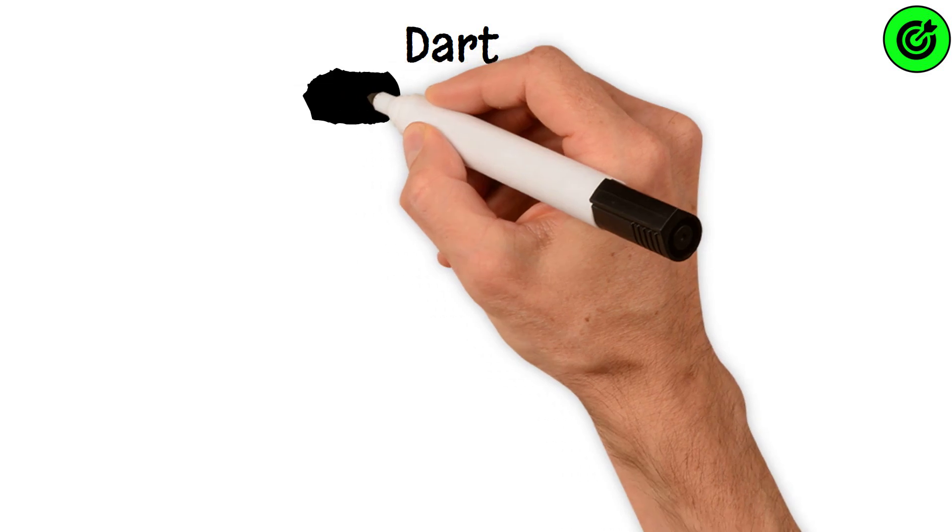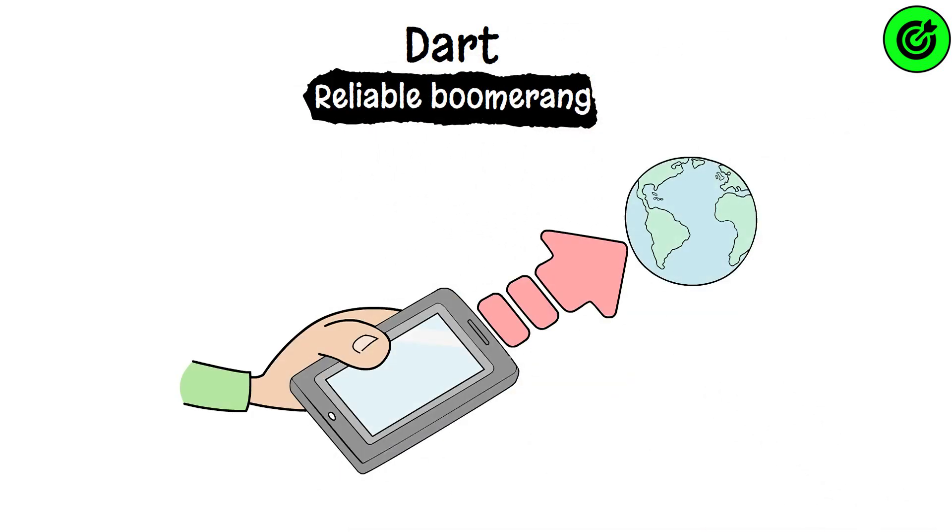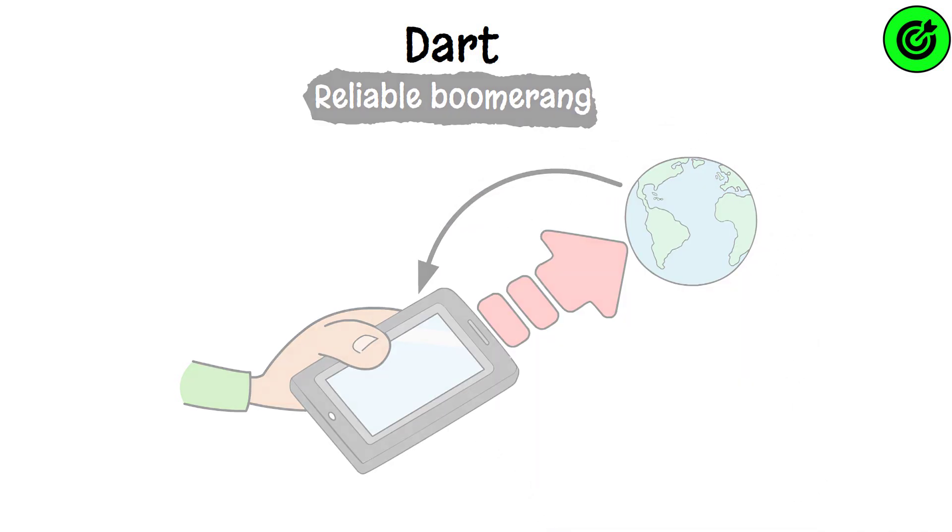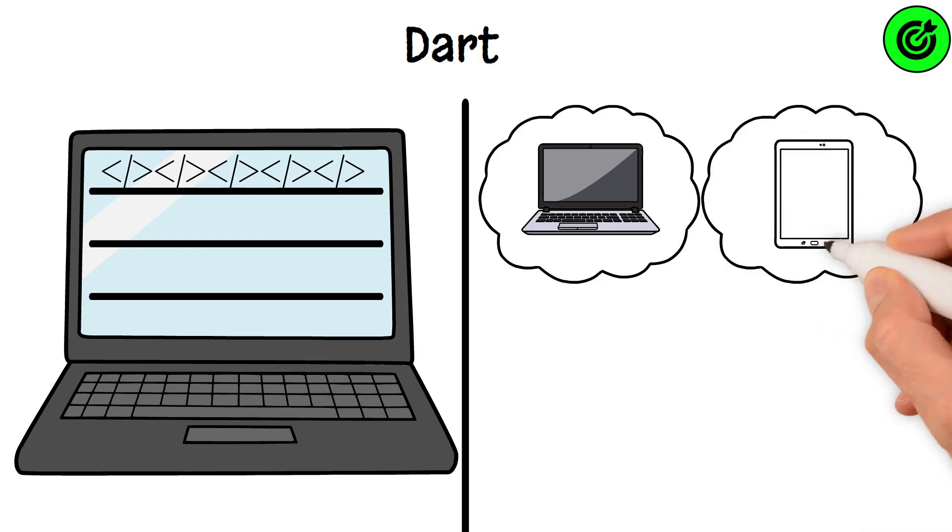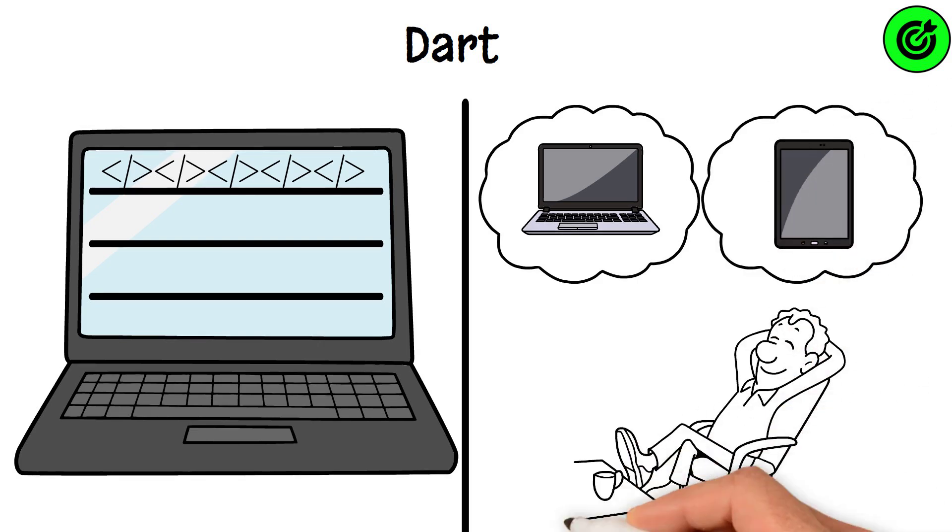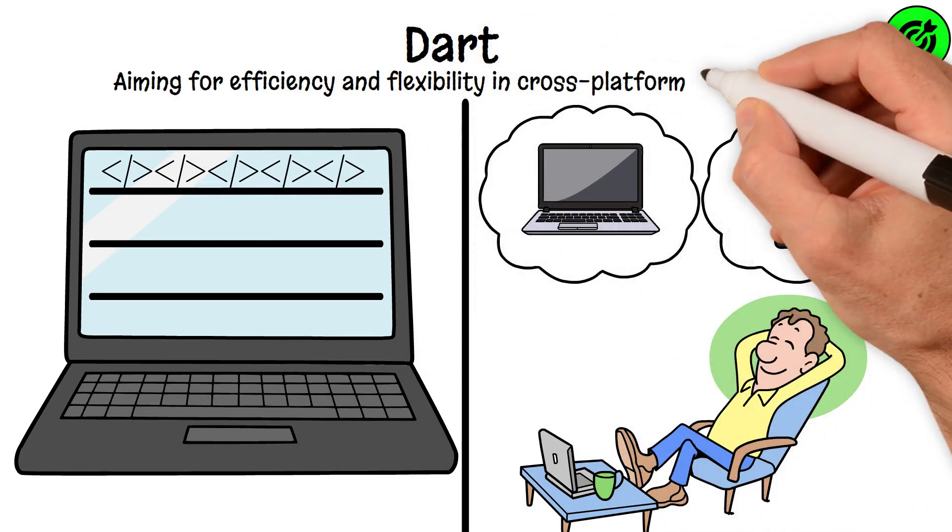Dart. Think of Dart as your reliable boomerang. What you send out into the app world, it brings back without fail. Dart ensures that the code you write can run smoothly both on web and mobile platforms, making it a go-to for developers aiming for efficiency and flexibility in cross-platform development.